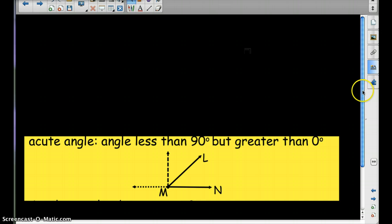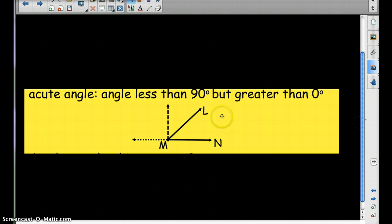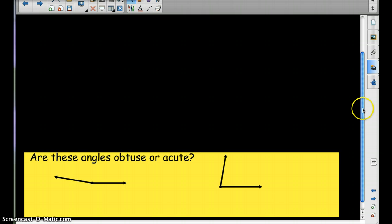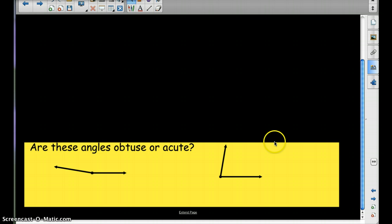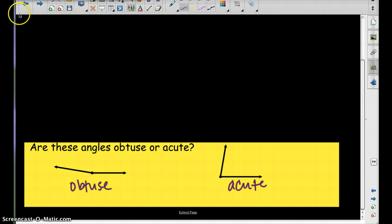Acute is less than 90 but greater than 0. So here it's the small angles. And then the last one, oh these are some examples. So are these angles obtuse or acute? Go ahead and pause the video and try this out. So the first one is obtuse. The second one is acute.